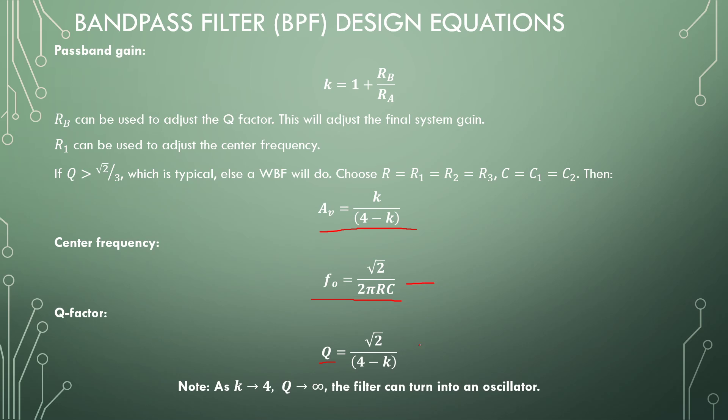So F0 here is your first design equation, and Q right here is your second design equation, which leads you to K equals 1 plus RB over RA. And lastly, you can just determine what the final gain of your filter is by applying this equation.